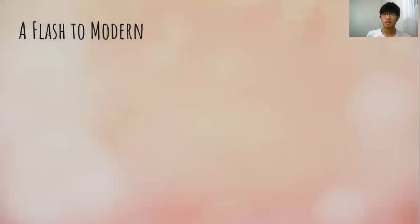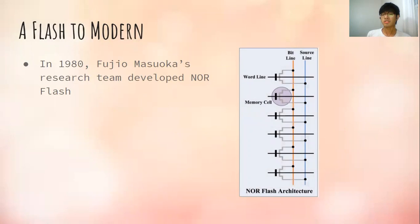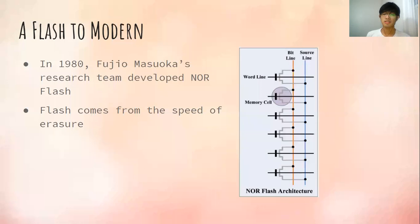Moving to modern technology — in 1980, Giorgio Masuoka's research developed NOR flash, with the structure shown on the side. It was named flash because of how fast it can erase its memory. Masuoka also developed NAND flash, which is a lot smaller than NOR flash and a lot faster in erasure and writing than NOR flash.